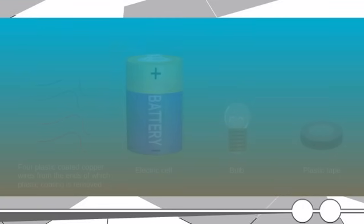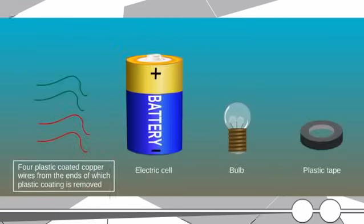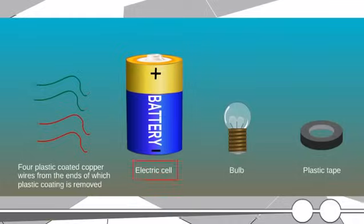Materials required: Four plastic coated copper wires from the ends of which plastic coating is removed, electric cell, bulb, plastic tape.